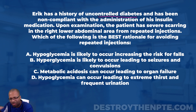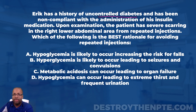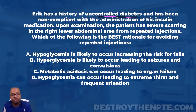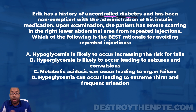Eric has a history of uncontrolled diabetes and has been non-compliant with the administration of his insulin medication. Diabetes is a metabolic condition where the body is having trouble utilizing glucose. For type 2, that's because of insulin resistance — the body isn't able to bring glucose into the cells because it's not responding to insulin. Insulin is responsible for helping glucose get into the cells so we can use it and convert it into energy.